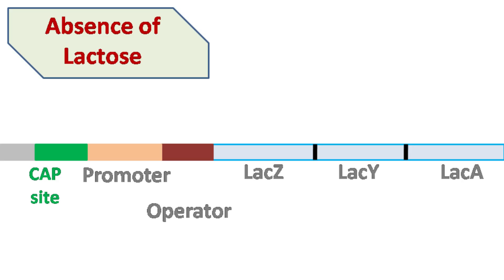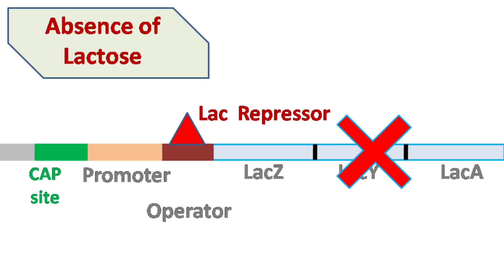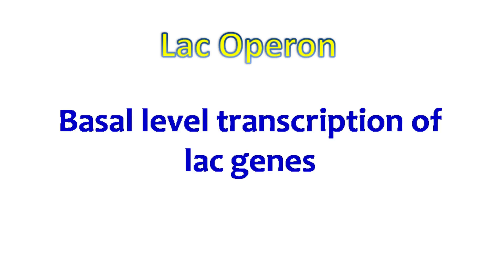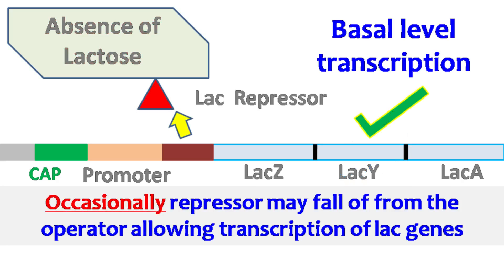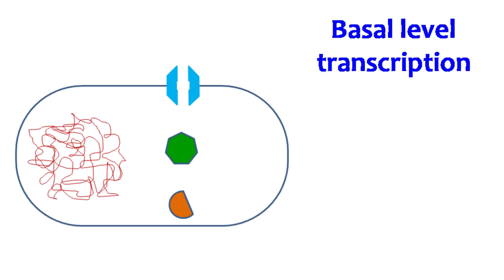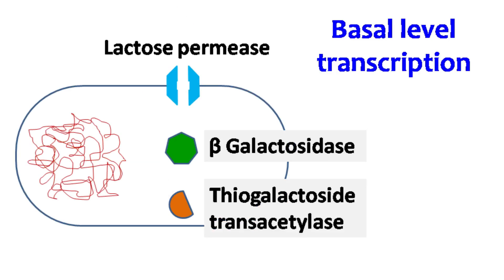Let's see how the lac operon functions. In the absence of lactose, the operator is occupied by the lac repressor, which ultimately shuts down the lac operon genes. However, sometimes even in the absence of lactose, the repressor may fall off from the operator, allowing basal level transcription of the lac genes. Because of this basal level transcription, there is always some amount of lactose permease, beta-galactosidase, and thiogalactoside transacetylase enzyme present in the cell.